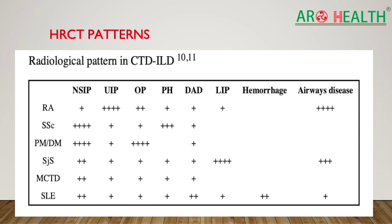When dealing with UIP secondary to connective tissue disease, there are more fibroblastic foci, more extensive honeycombing compared to idiopathic UIP. The radiological pattern in RA is mostly UIP, followed by OP and NSIP, with airways disease also very common. In systemic sclerosis, NSIP predominates and pulmonary hypertension must always be ruled out as it is an important cause of mortality.